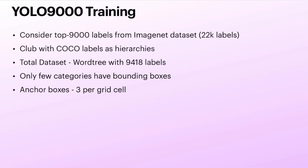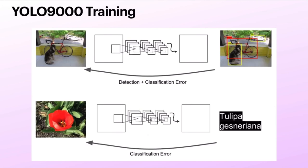Anchor boxes have been reduced from 5 to 3 — the original YOLO V2 used 5 anchor boxes, but for YOLO 9000 training they reduced to 3. They trained the YOLO object detection architecture, and to handle the fact that only some images have bounding boxes, the approach is: if an image is from the COCO dataset and has bounding boxes, back-propagate the full loss — both detection and classification loss. But if an image is from the ImageNet dataset with only class information and no boxes, propagate only the classification loss. The model weights are adjusted in both cases.